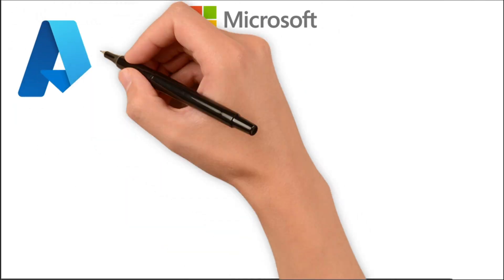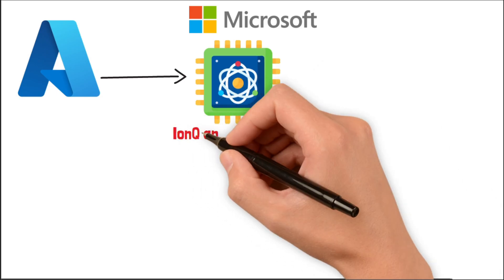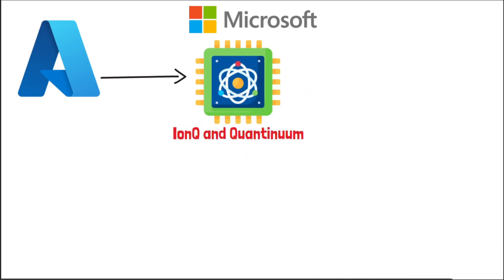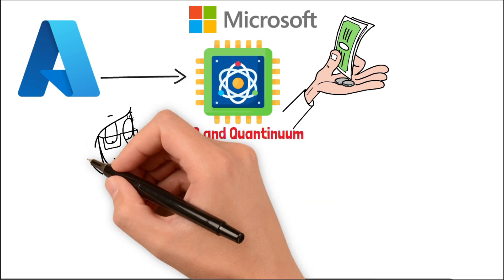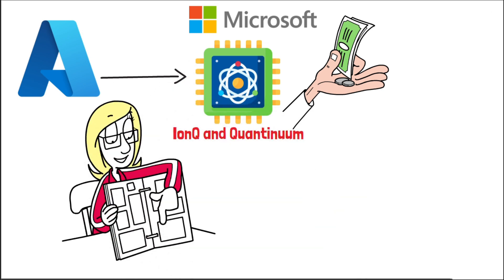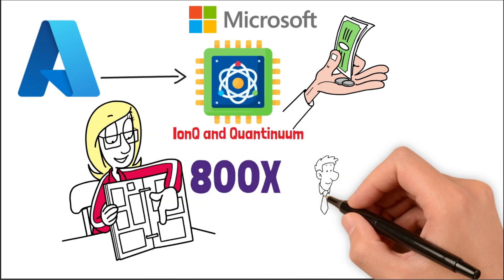Then there's Microsoft, playing the long game. Azure Quantum already offers access to real quantum machines like IonQ and Quantinuum. But Microsoft isn't just renting hardware, they're selling outcomes. Their work in error correction recently beat every previous benchmark by 800 times. That's the kind of breakthrough that turns theory into scalable products.